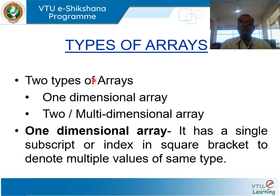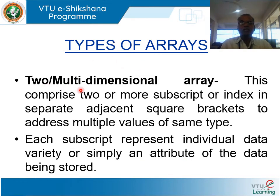There are two types of arrays: one-dimensional arrays and two or multi-dimensional arrays. A one-dimensional array has a single subscript or index in square brackets to denote multiple values of the same type. A two or multi-dimensional array comprises two or more subscripts or indices in separate adjacent square brackets to address multiple values of the same type. Each subscript represents an individual data variety, or simply an attribute of the data being stored.